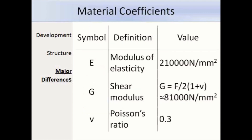Eurocode 3 defines the following material coefficients: the modulus of elasticity E is equal to 210 kN/mm², the shear modulus is approximately 81 kN/mm², and Poisson's ratio is 0.3. The value of the modulus of elasticity used in Eurocodes is slightly higher than that used in BS 5950, which used 205 kN/mm².